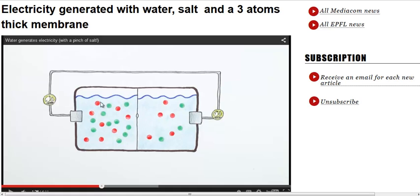So they have salt water on this side, these dots represent salt ions, and less salt water on this side. And the water is naturally going to want to balance out and reach an equilibrium with salt content. So the ions are going to pass through this thin membrane. It's going to release some electricity and they're going to capture that electricity.